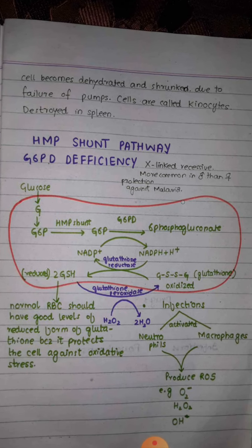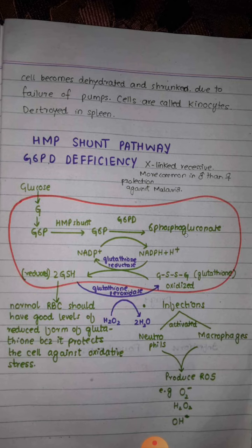Here we can see a red blood cell. Glucose enters the red blood cell and is converted into glucose 6-phosphate. This glucose 6-phosphate enters the hexose monophosphate shunt pathway, where it is acted upon by the enzyme glucose 6-phosphate dehydrogenase, which converts glucose 6-phosphate to 6-phosphogluconate.